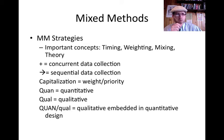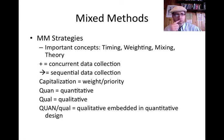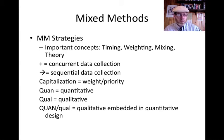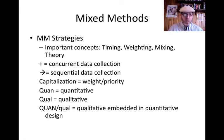A couple of symbols are important. The plus sign generally indicates concurrent data collection, whereas the arrow means sequential data collection. Capitalization usually indicates weight or priority. QUAN stands for quantitative and QUAL for qualitative. So QUAN in all caps with a slash and lowercase qual means the quantitative is weighted heavily and the qualitative is less heavily weighted — or that the qualitative is embedded within a quantitative design. It might be reversed: QUAL in all caps and then slash QUANT.